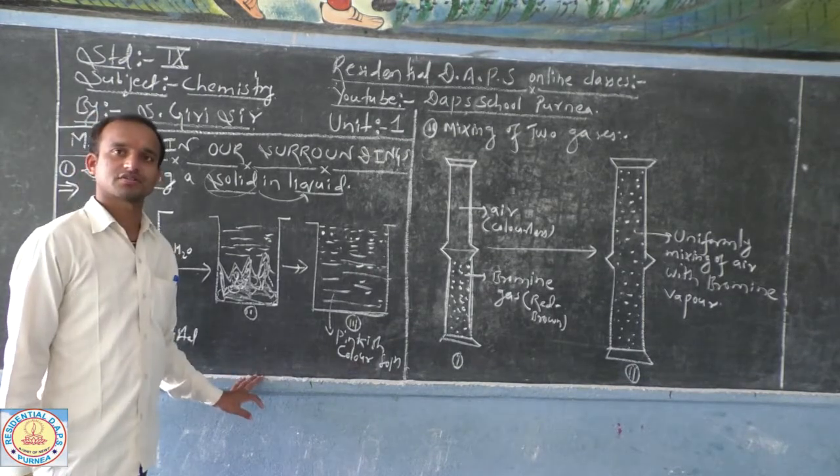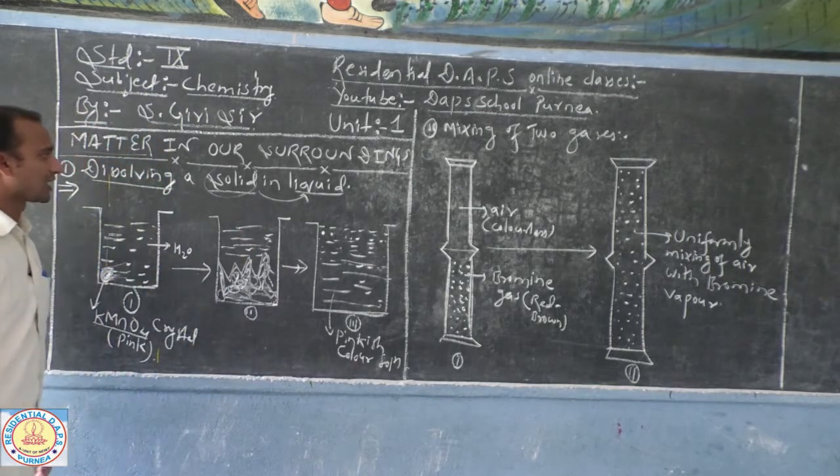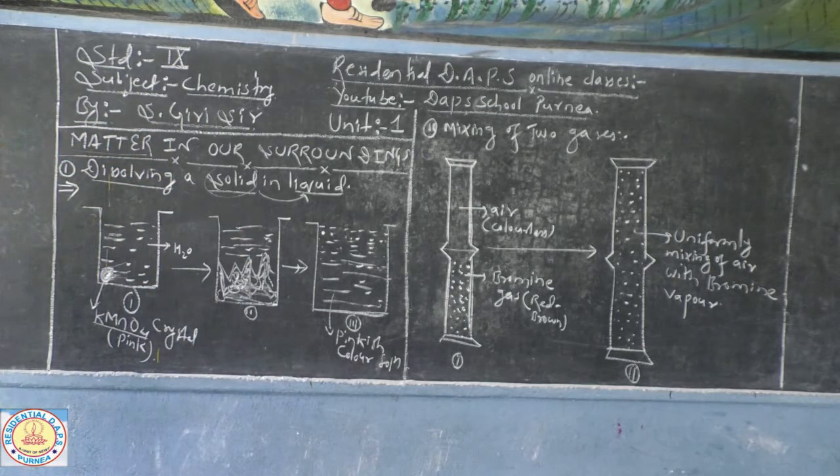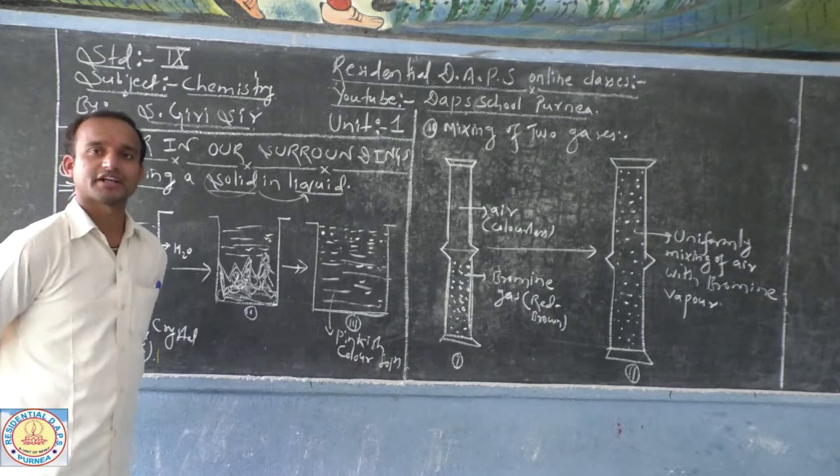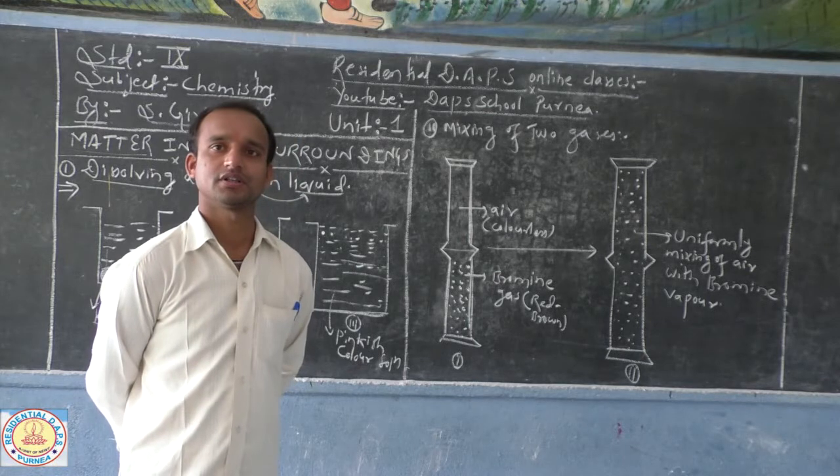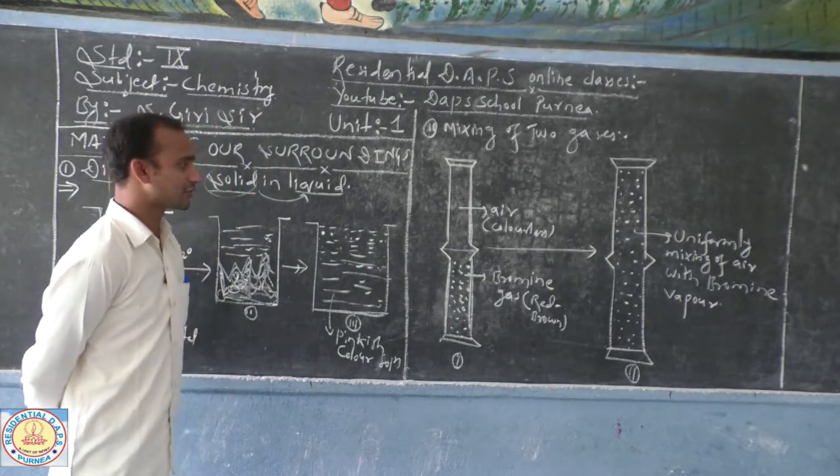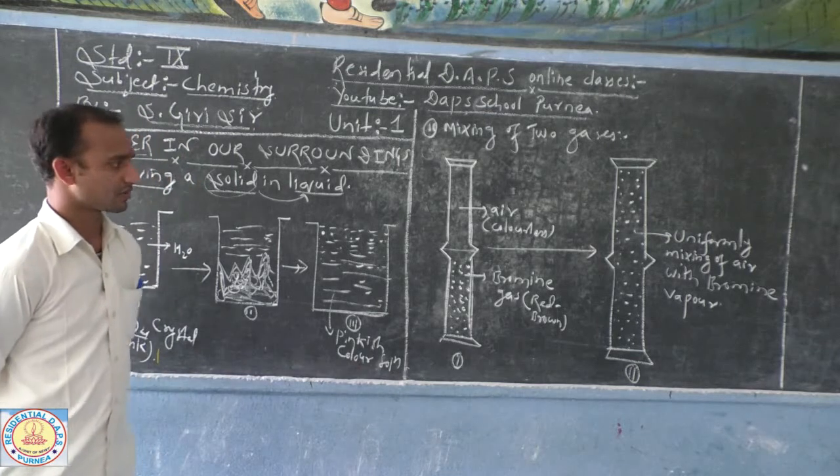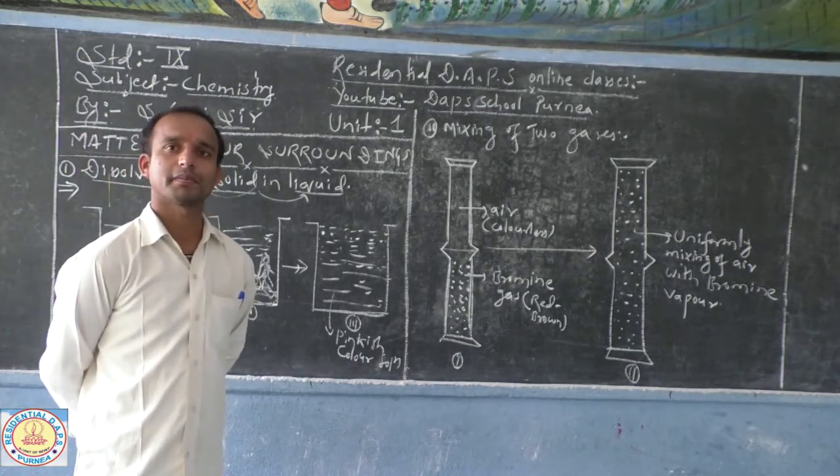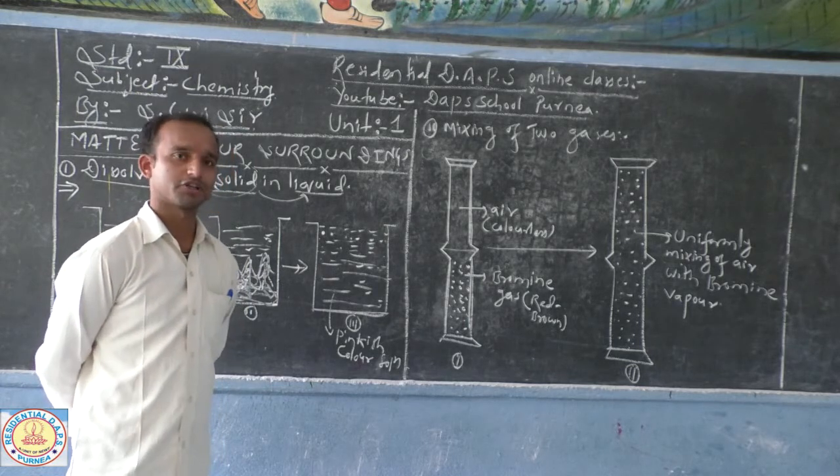So now, dear students, here are some evidence to prove that matter is made up of many tiny particles. Here are some activities demonstrated so that by studying this activity we can easily get to know that matter is made up of many tiniest particles known as atoms or molecules.